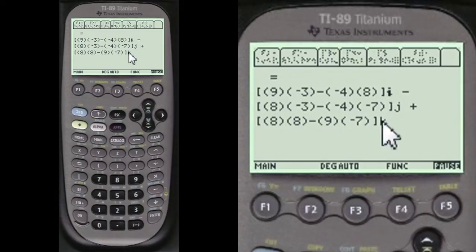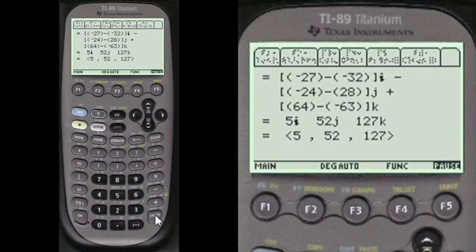This is I, J, and K. That's a different vector format. 5, 52, J, 127, K. And here's the vector situation with the arrows here. 5, 52, 127.